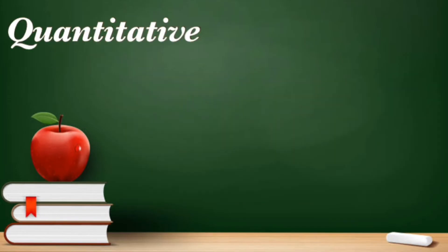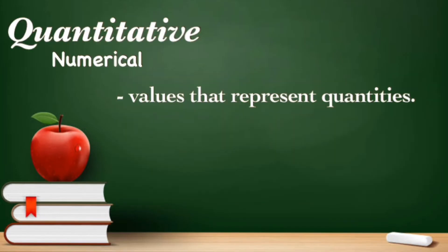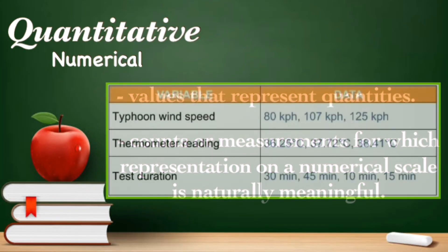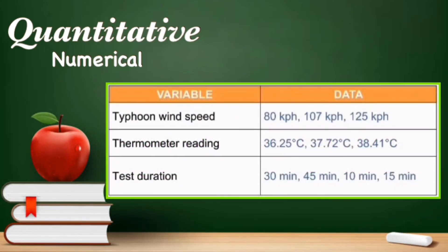Next is the quantitative variable, also called the numerical variable. Quantitative variables are values that represent quantities, counts, or measurements for which representation on a numerical scale is naturally meaningful. They usually come from measuring tools, such as typhoon wind speed, thermometer readings, or test durations.